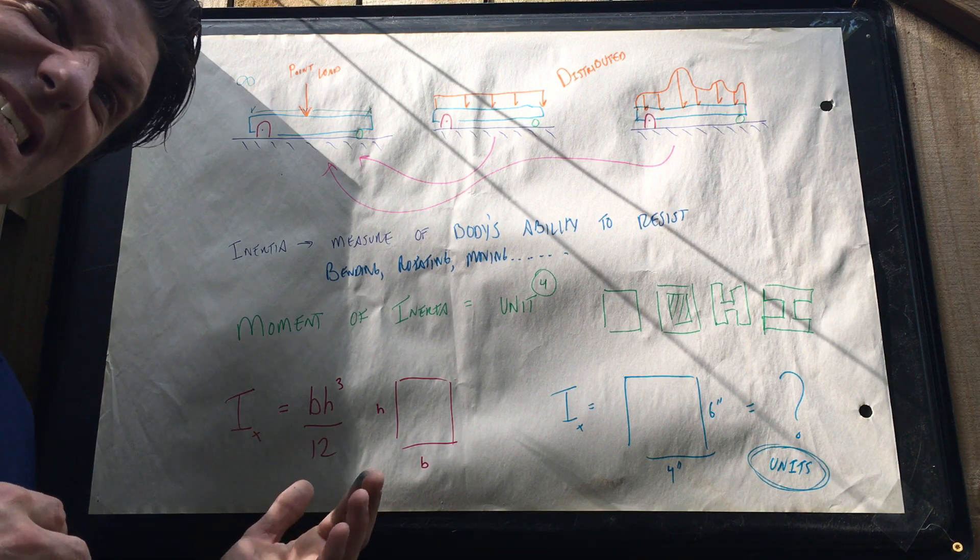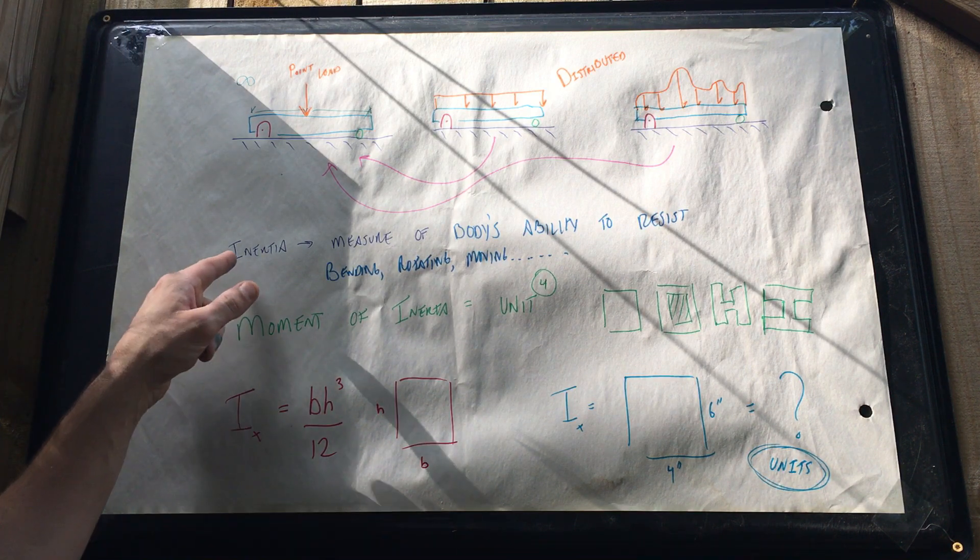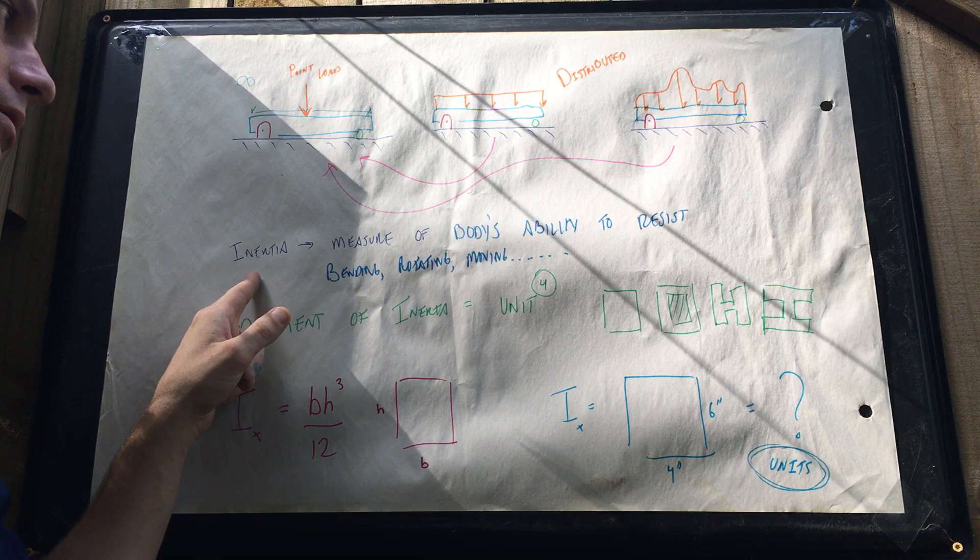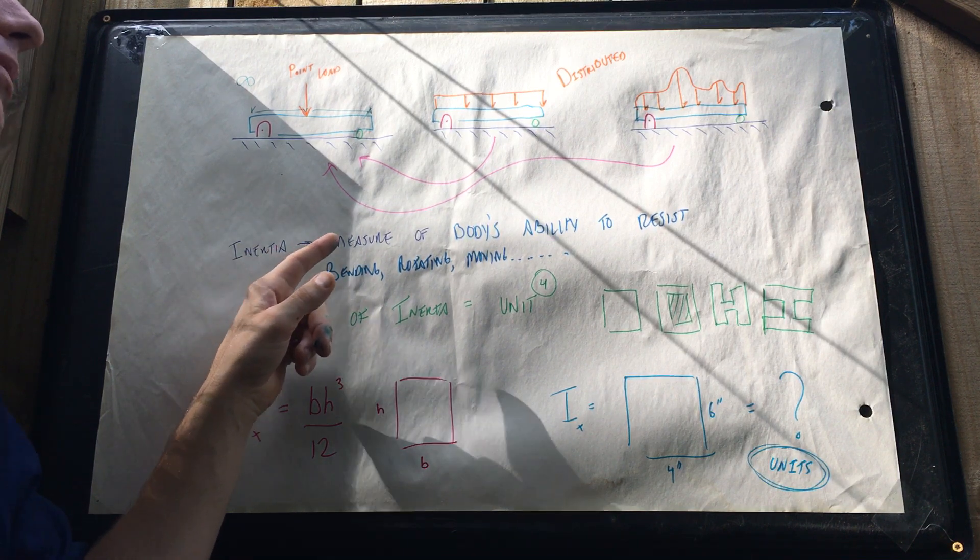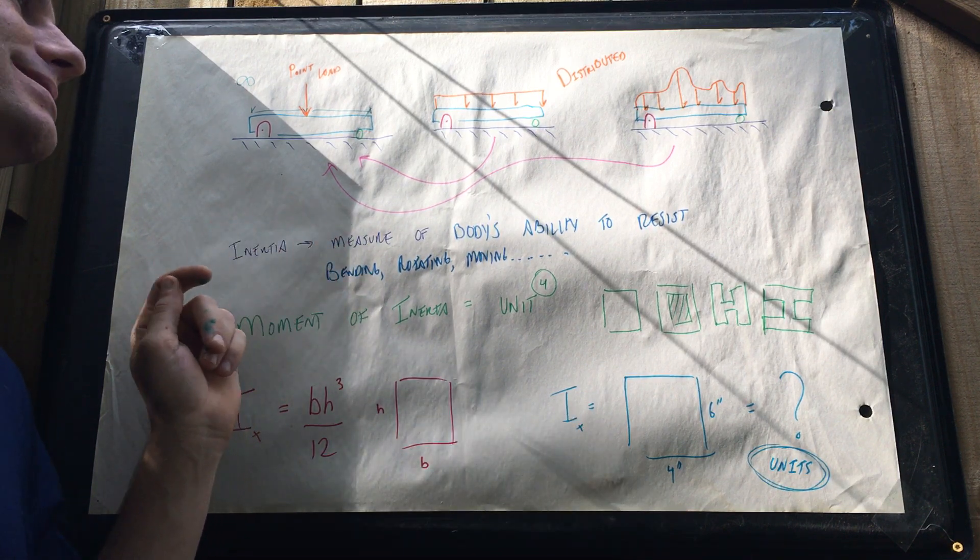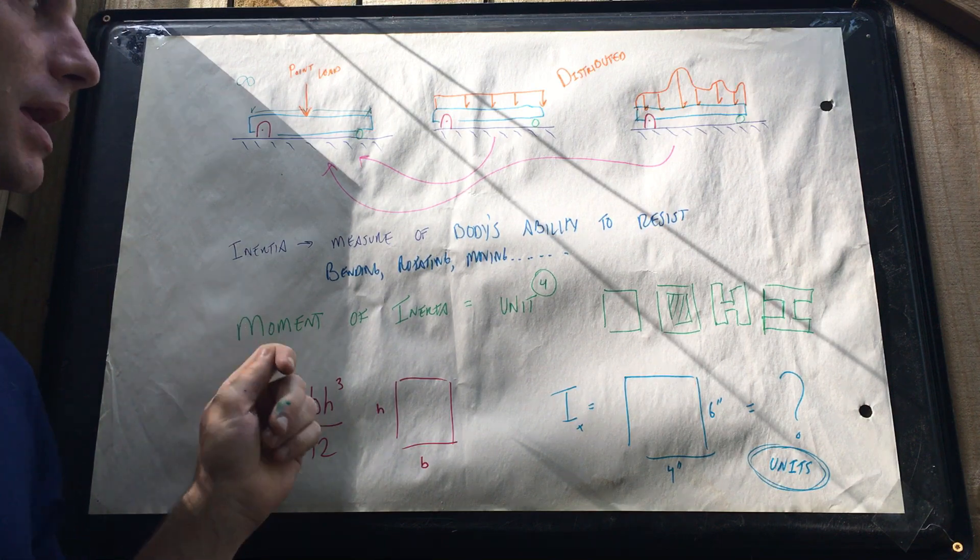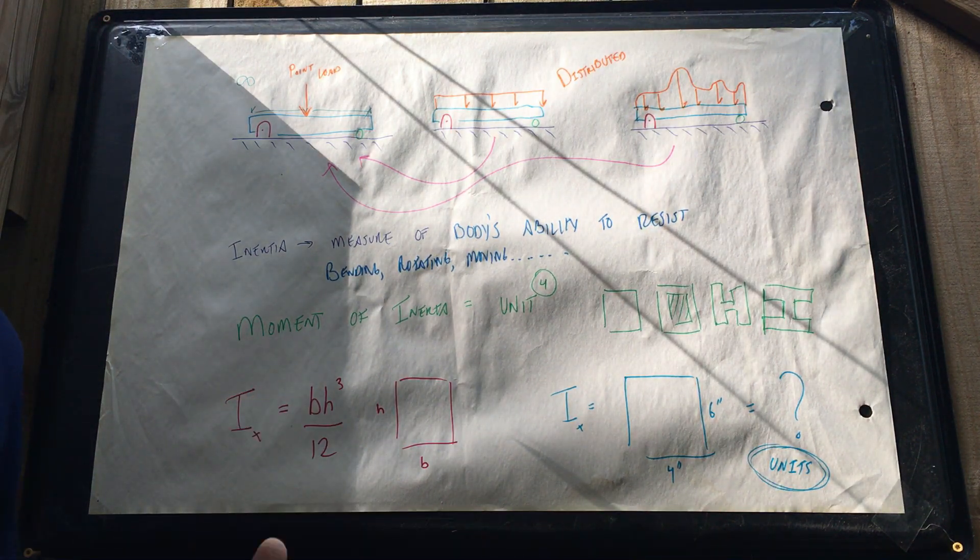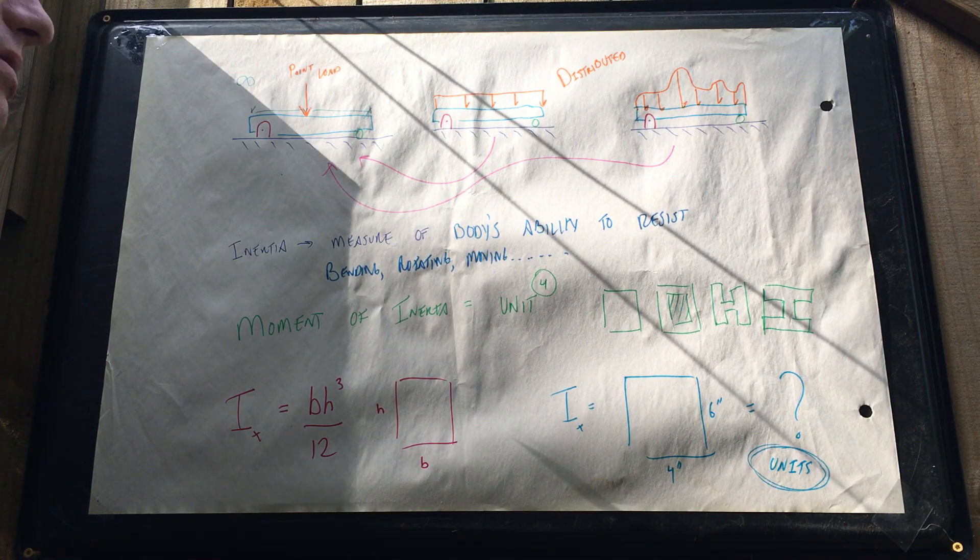In terms of assessing that deflection, what I originally talked about, we have to measure inertia. Inertia is the measure of a body's ability to resist bending, rotating, moving, any type of movement essentially.